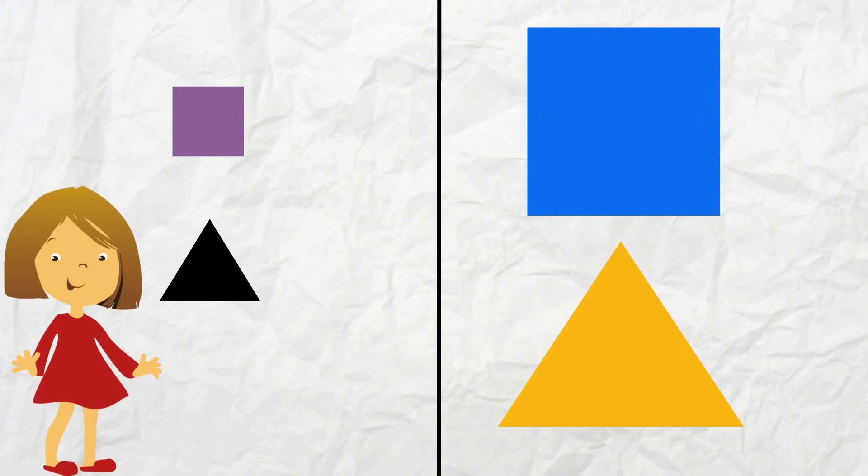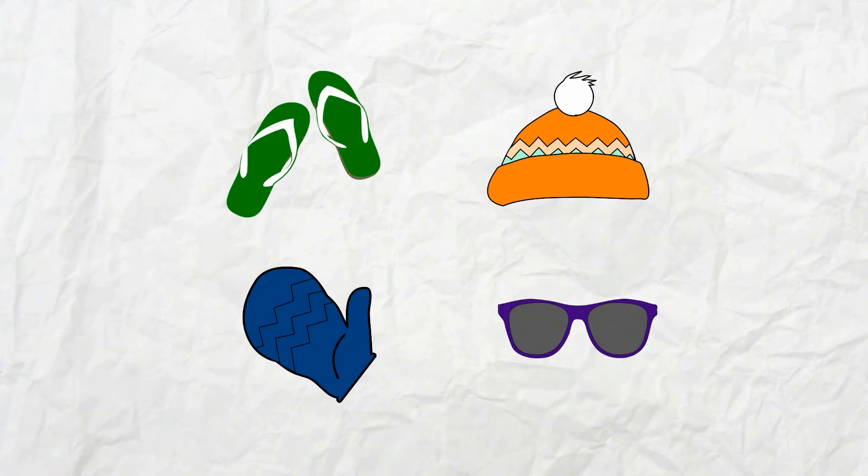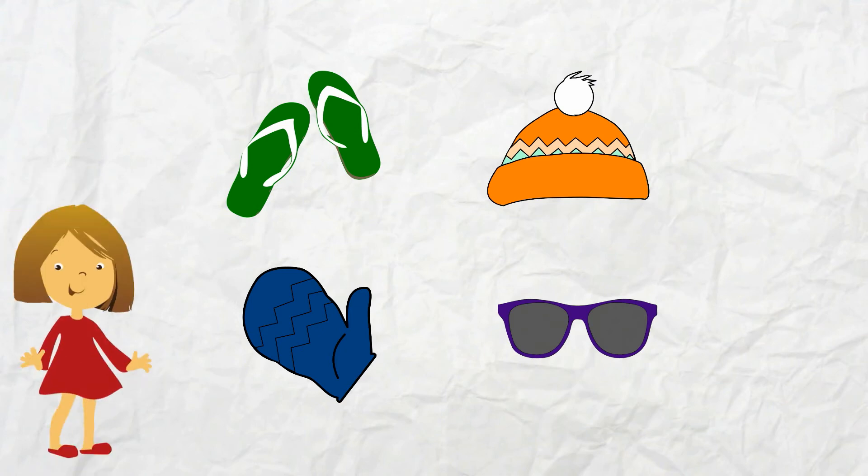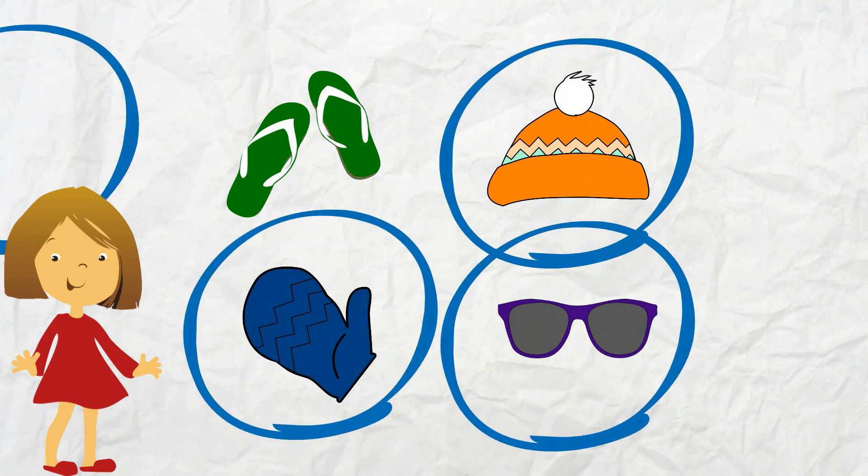Let's try one more. Hmm, I don't think I can sort this group by color, shape, or size. I see a blue mitten, an orange hat, purple sunglasses, and green sandals. I know!